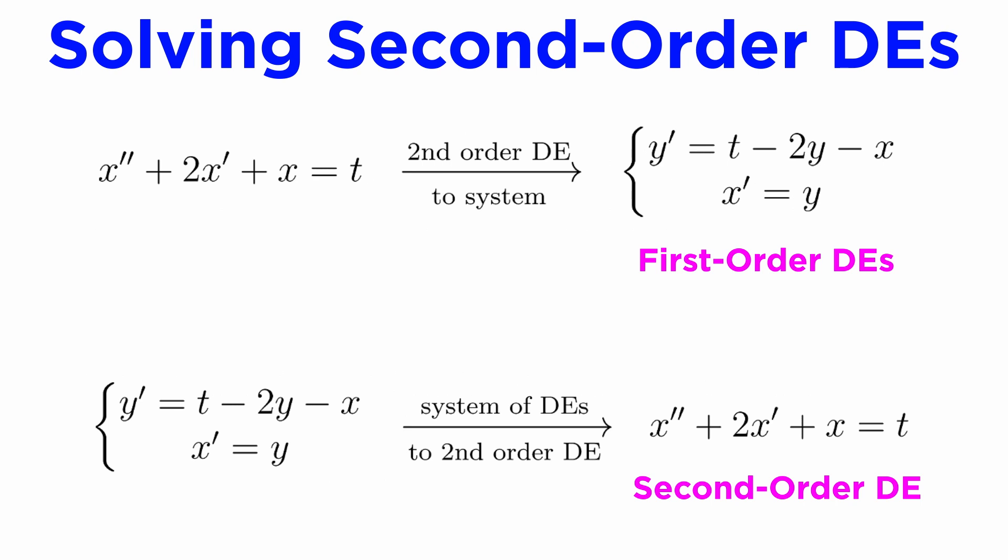Using a method that is almost like the inverse of what we did previously, we will be able to convert a system of two first-order DEs into one second-order DE, which we may be able to solve using any of the methods we learned earlier in the series.